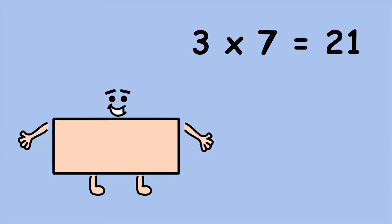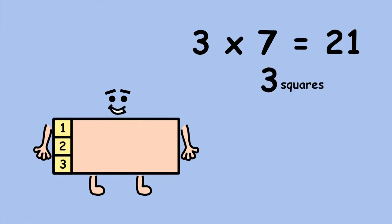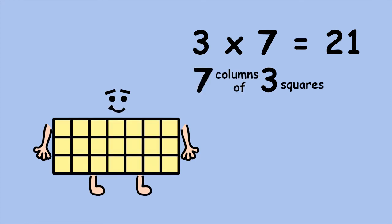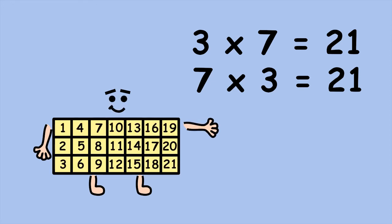If you don't like counting rows, you can count columns instead. There are three squares in a column. Now, how many columns are there? 7. 7 groups of 3, or 7 times 3 equals 21. Either way, you get the same answer.